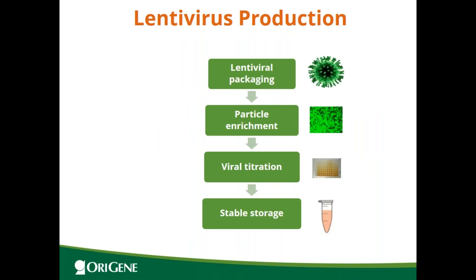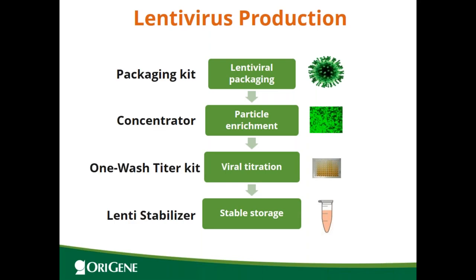To summarize, I have covered lentivirus production: how to package the virus, how to enrich viral particles, measure the titer, and increase stability. At every step, OriGene has a kit or reagent — a high packaging efficiency kit for viral packaging, the Lenti Concentrator to concentrate the virus, the one-wash titer kit to measure the titer, and the Lenti Stabilizer to increase lentivirus stability.